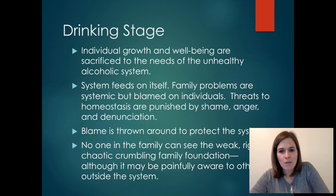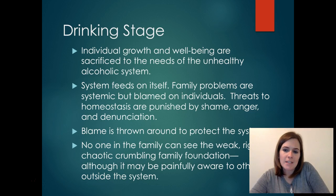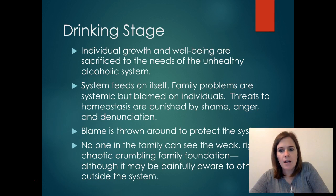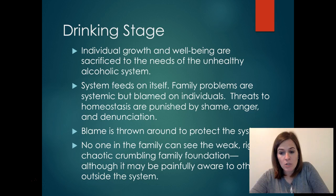Also the system feeds on itself. Family problems are systemic but they're going to be blamed on individuals. Threats to homeostasis are punished by shame, anger, and denunciation. You might see this with teenagers — maybe there's a teen with a drinking or drug problem and it's really easy for the family to blame it all on that teen, instead of recognizing that everybody plays a part in what's going on. Blame will be thrown around to protect the system and keep the homeostasis.